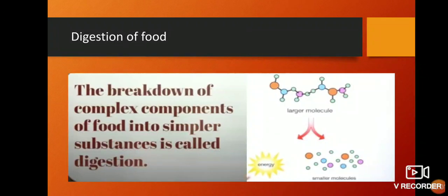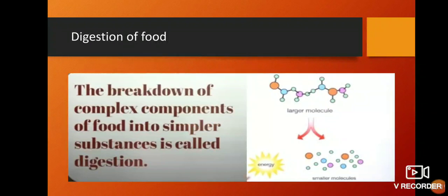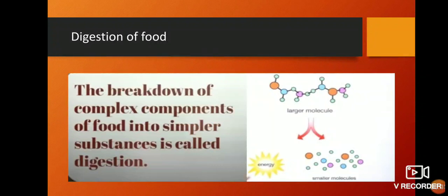The number two step of nutrition is digestion. What is digestion? The breakdown of complex components of food into simpler substances is called digestion. The components we eat — carbohydrate, protein, fat — are broken into smaller, simpler substances. Protein changes into amino acids, carbohydrate changes into glucose, and fat changes into fatty acids after digestion, so that our body can absorb these nutrients.